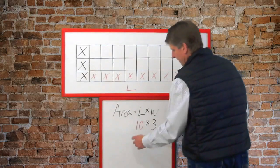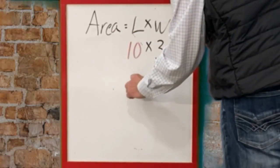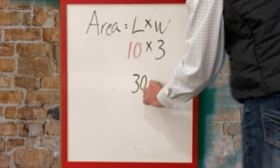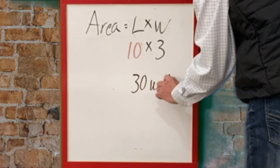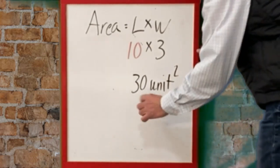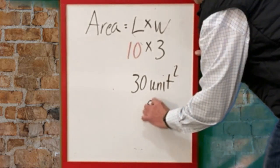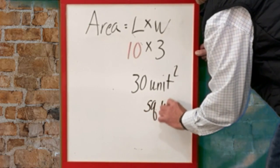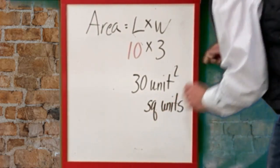So the area of this shape is 30 units squared. We say that we put that little two there or you can also write square units because this tells us how many units make up this polygon.